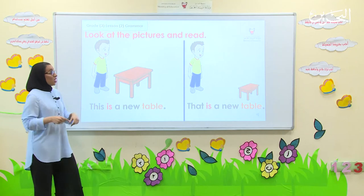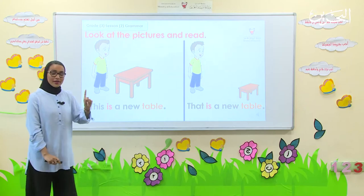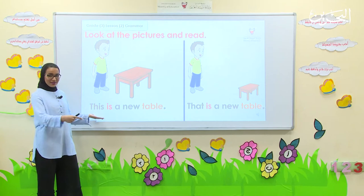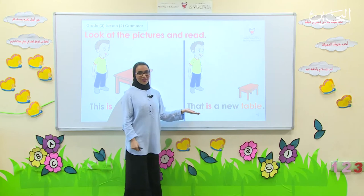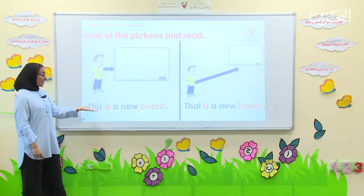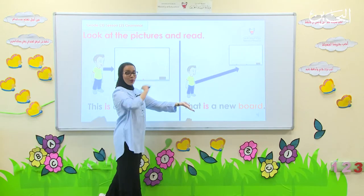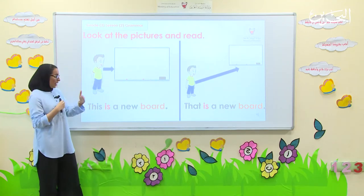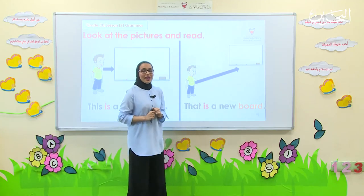Now, look at the pictures and read. I will read it once and you have to repeat. This is a new table and that is a new table. This is a new board and that is a new board. So, be careful: we use 'this is' for one near thing, and we use 'that is' for far things.